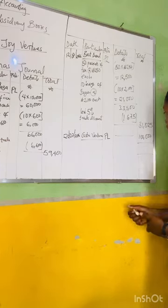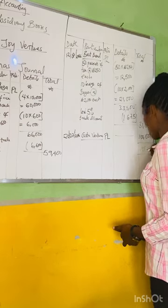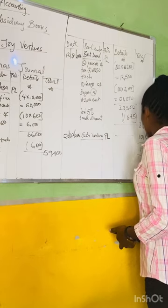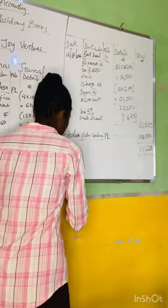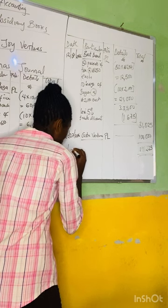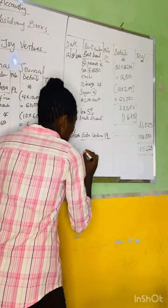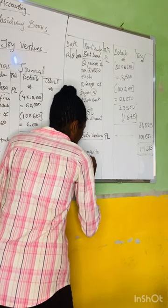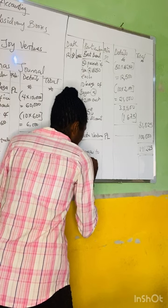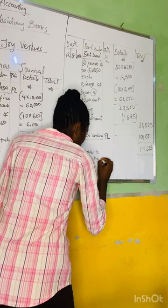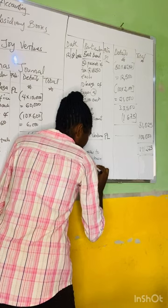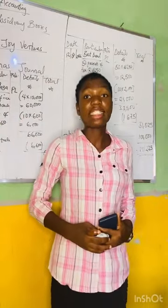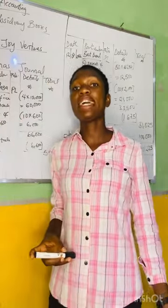At the end of the month we add up all totals: 59,400 + 31,825 + 100,000 = 191,225 naira. On the 31st of July, we transfer this total to the debit side of our purchases ledger. After entries are made in the subsidiary book, we move the total at the end of the period to the ledger account.